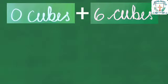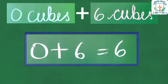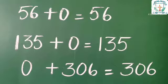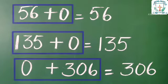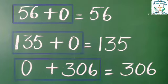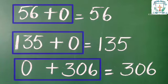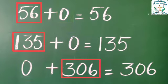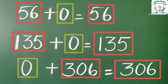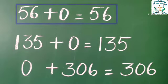We get the answer as 6, so 0 plus 6 is equal to 6. Now add these numbers: 56 plus 0, 135 plus 0, 0 plus 306. When we add 0 to any number, we get the same number. So 56 plus 0 is equal to 56, and 0 plus 306 is equal to 306.